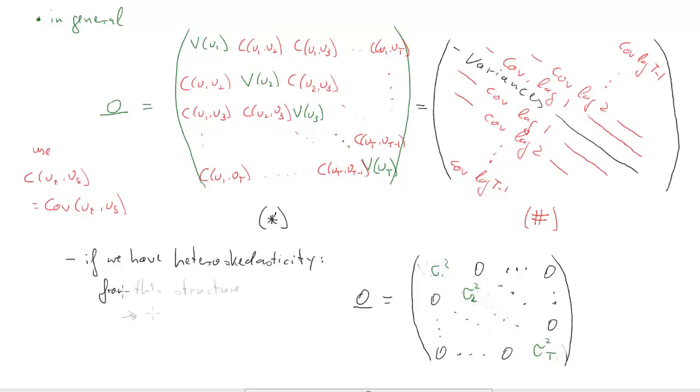That was important, this omega, because from this structure, we actually figured out how to perform robust inference. It was Herbert White who did, but we learned what he proposed. And this structure was also important to figure out how we perform weighted least squares, which was the particular form of GLS, which we used to find efficient estimators.